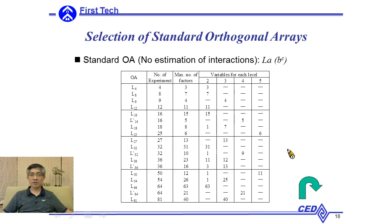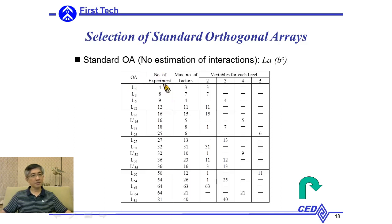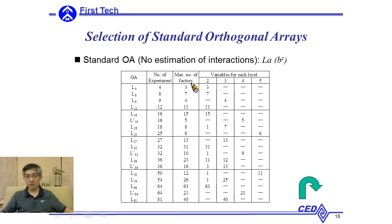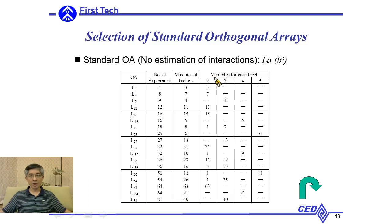Taguchi collected a lot of orthogonal arrays for engineering applications. In this table, one column stands for how many experiments will be in the orthogonal array, another stands for the maximum number of factors that can be used, and the remaining columns show how many factors are in two levels, three levels, four levels, and five levels.